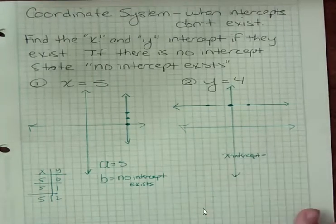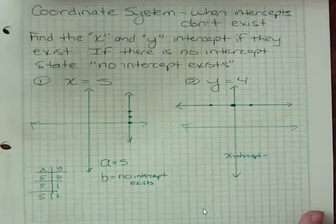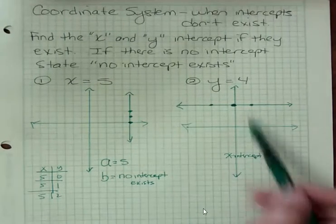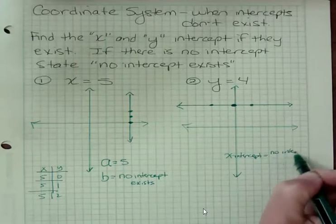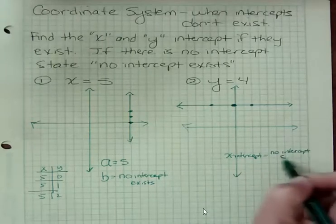Is this line ever going to cross the x axis? The answer is no, they're parallel, they're never going to intersect. So no intercept exists.